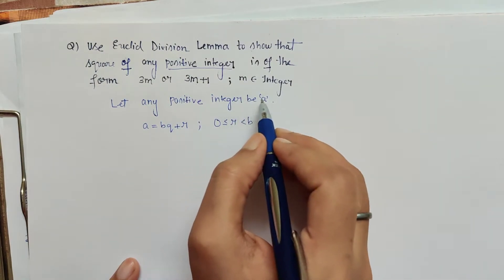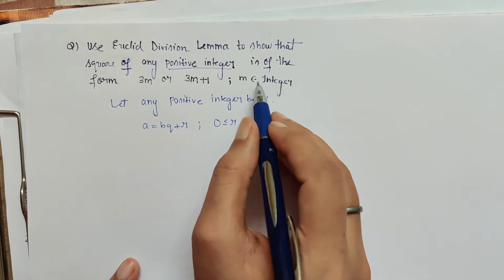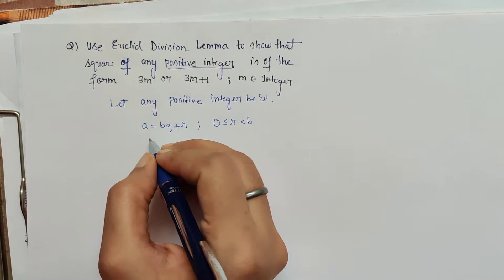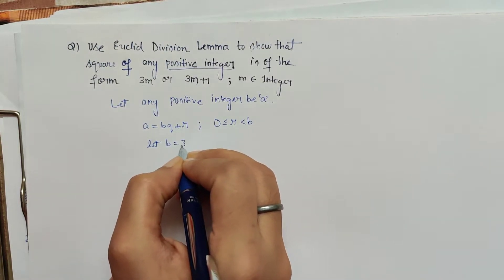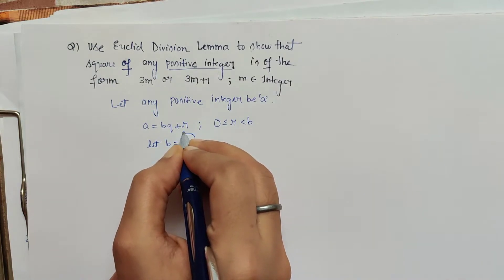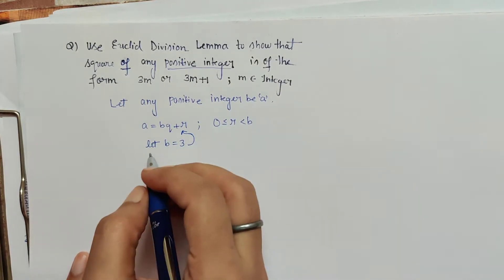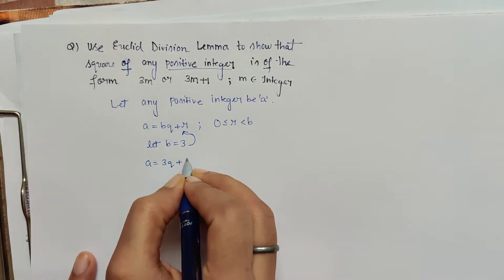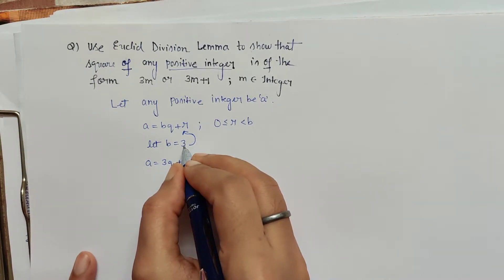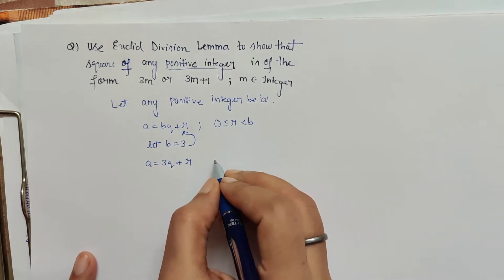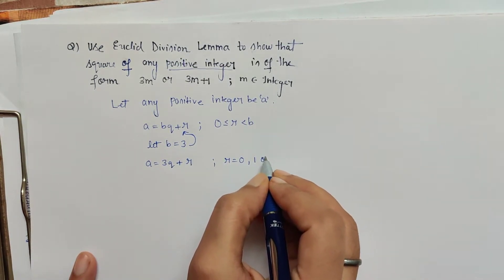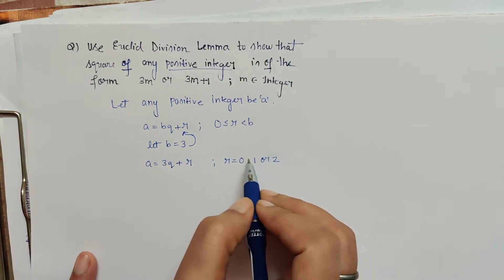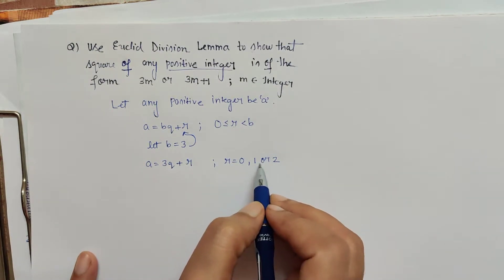We have considered a as any positive integer, and as per the requirement of the question we let b equal 3. Putting these into the Euclid division lemma equation gives a = 3q + r. The possible values of r must be less than b, which is 3, so r can take the values 0, 1, or 2.